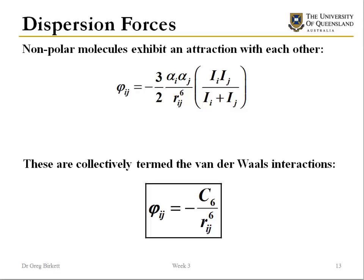Dispersion forces are due to small fluctuations in molecules — for brief moments in time the molecules do have charge distributions, and when you add all these up over time you get a net attractive force. Again it's proportional to polarizability. Van der Waals collected all these terms together and showed that the interaction under dispersion forces is equal to some proportionality constant related to polarizability divided by R⁶ — again the 1/R⁶ relationship.